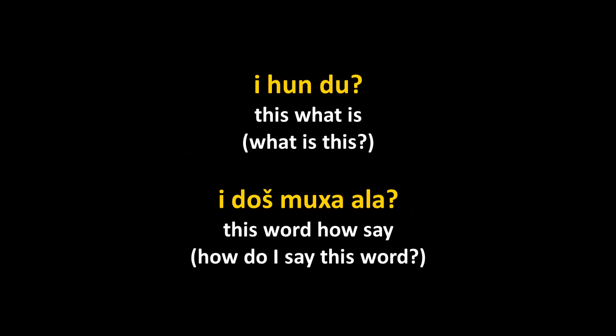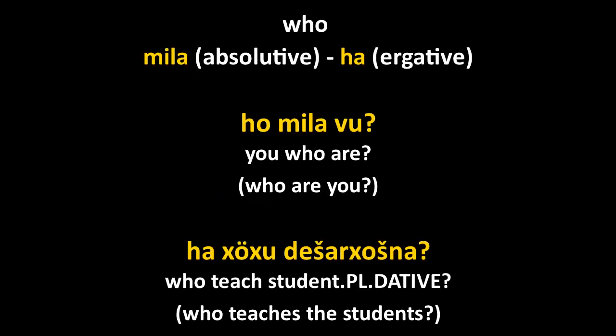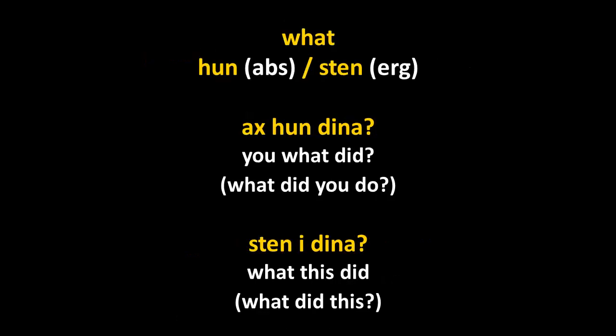The interrogative pronouns who and what have very different forms in the absolutive and ergative. They are declined like nouns and change substantially between the absolutive and ergative shapes. 'Who' is mila in the absolutive — used as the subject of the verb 'to be' — but becomes ha in the ergative, when used as the subject of a transitive verb like 'to teach': 'who teaches the students?' uses ha. The word 'what' changes from hun to stien: as hun dina means 'what did you do?' but stien e dina means 'what did this?' because 'what' is the subject of a transitive verb.